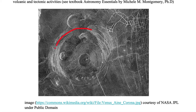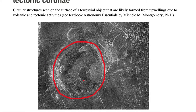The corona we're talking about is this center structure. Corona is singular, coronae is plural. We only have one corona shown here. Associated with the corona, which is this upwelling due to volcanic and tectonic activities, we see other features that are sometimes associated with these coronae.